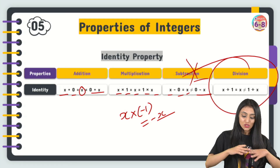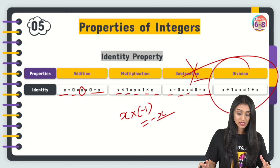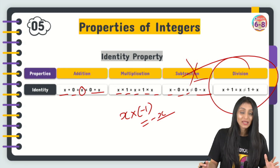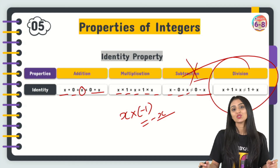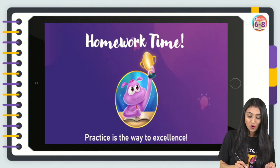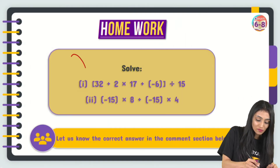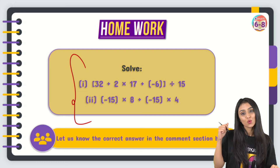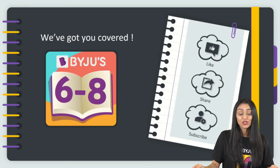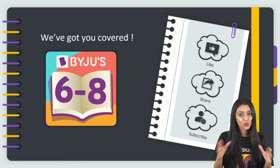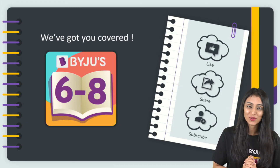In this session we discussed all the properties of integers — closure, commutative, associative, distributive, and identity. If you have any doubts, post them in the comment section. There's also a homework question — try to solve the two given questions and share your answers. If you're enjoying these videos, please like, share with your friends, and subscribe so you don't miss any new updates. Thank you!